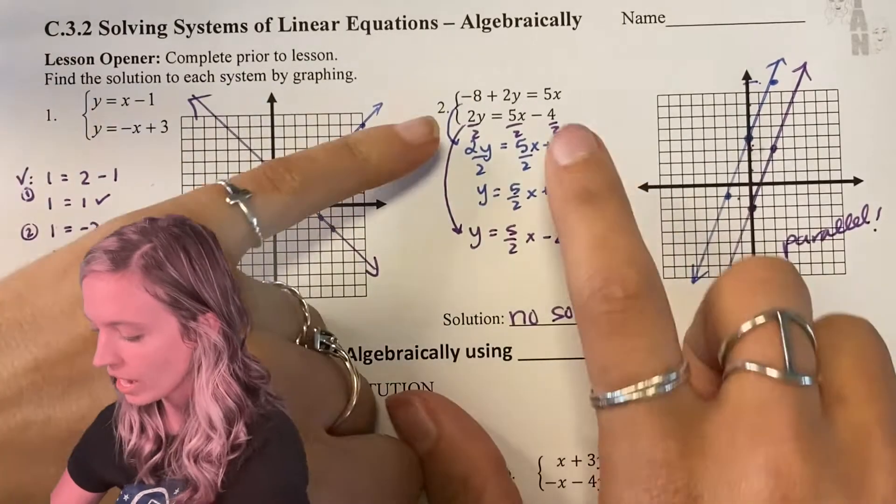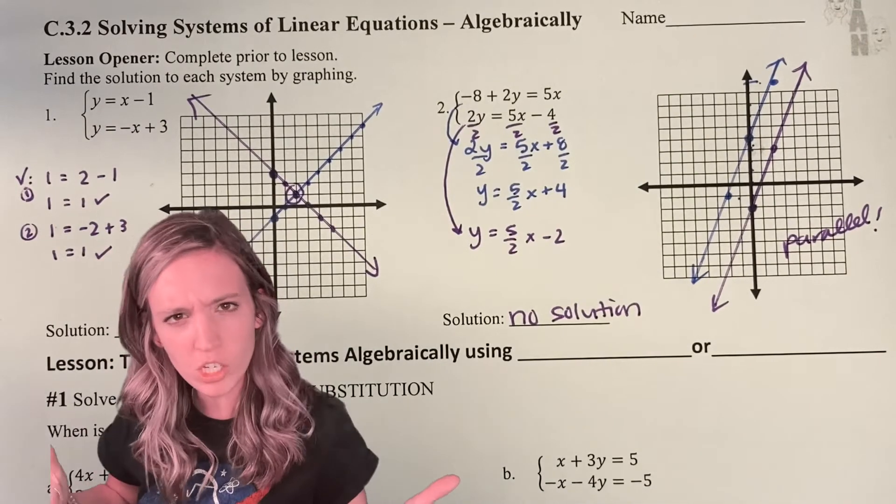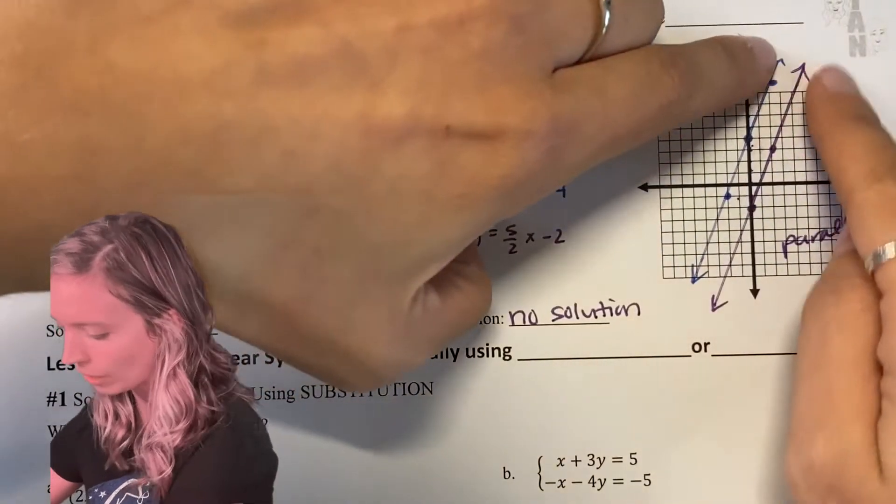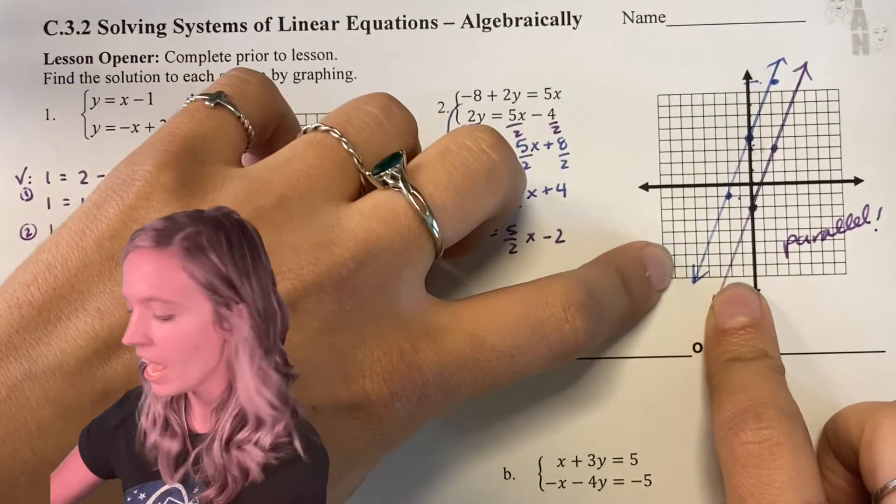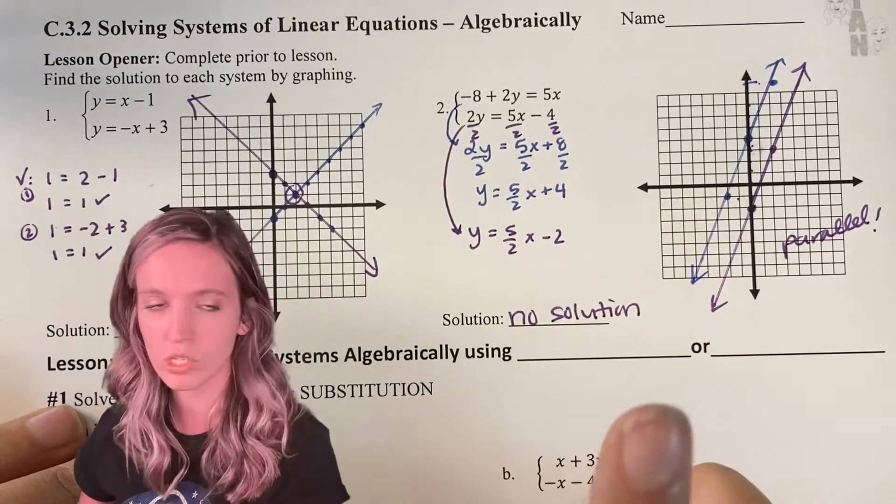Looking at the next one, I graphed these two lines. I was already noticing they have the same slope, but when we're graphing solutions, I still want to see you graph that. I'm confirming they do indeed have the same slope. They're parallel, so they never intersect. So no solution.